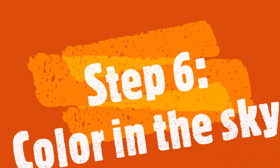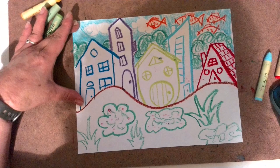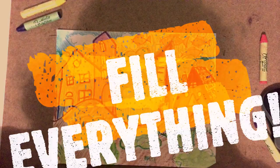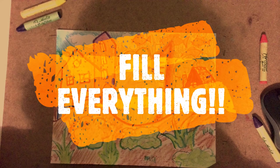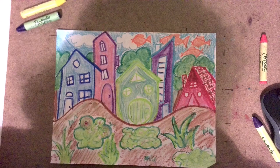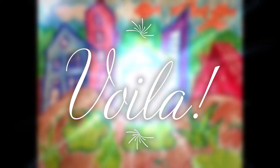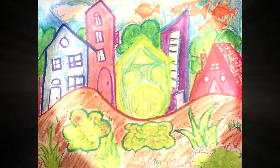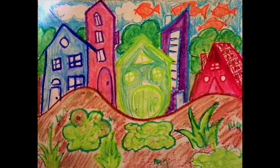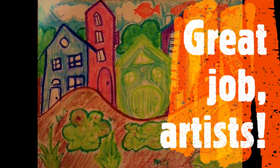For step six we are going to color in the sky. I colored mine blue, but you can color yours black or purple for night. In fact, we are going to fill everything in with color. After all that work, there you have it — your very own Marc Chagall inspired artwork with your imagination in the sky. Great job artists, see you soon!